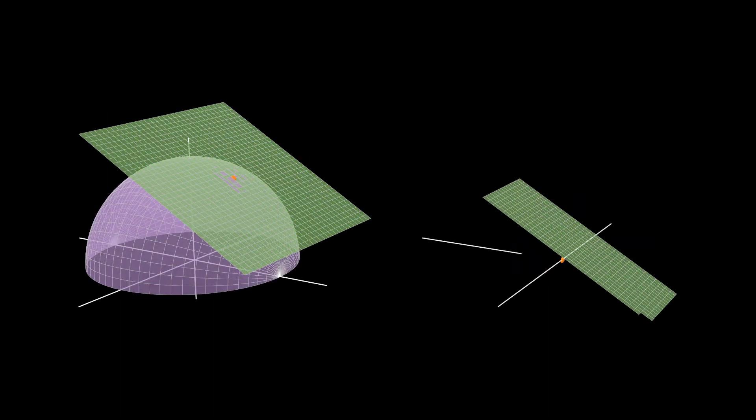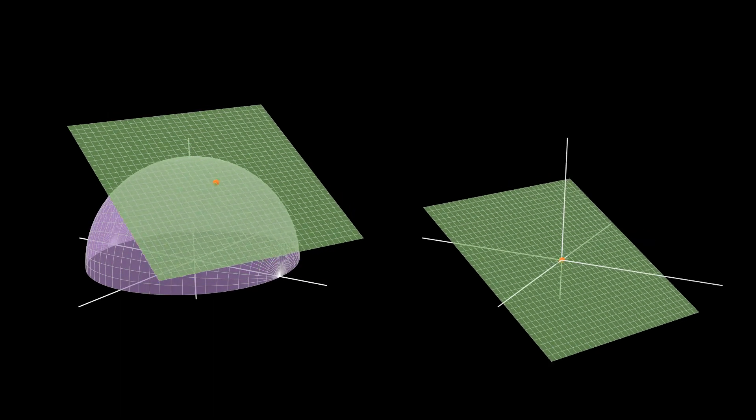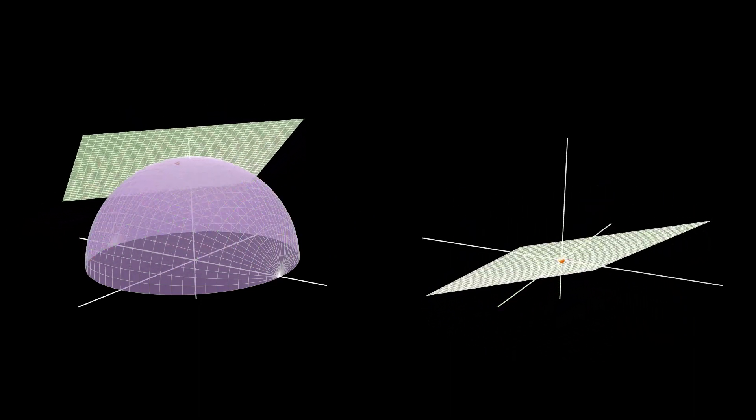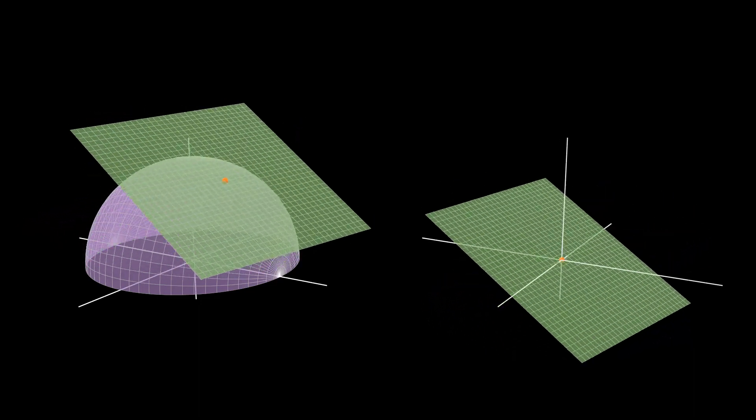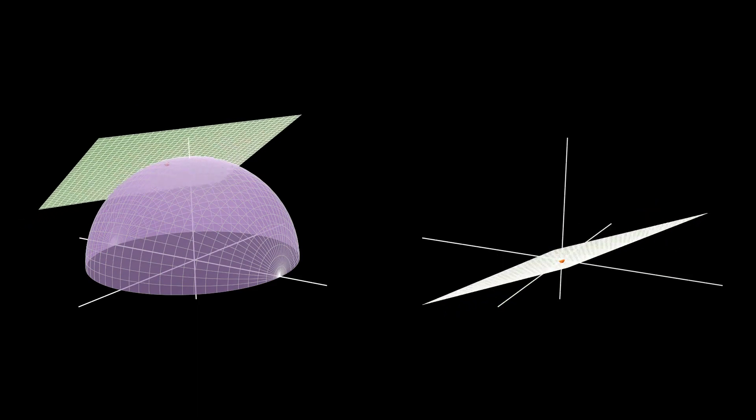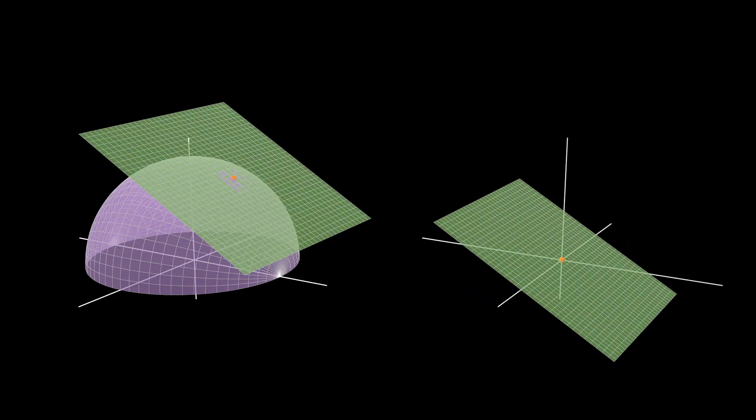For each point p in sigma, we have a tangent plane Tp sigma, which depending on the context, we will think of it as a plane on top of sigma, or as a vector subspace of r3 passing through the origin.